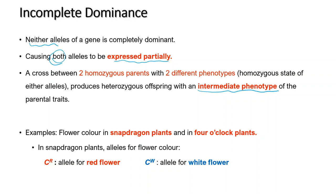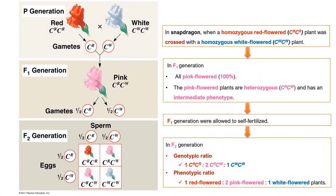In snapdragon plants, flower color is controlled by two alleles: CR for red flower and CW for white flower. When a homozygous red-flowered snapdragon is crossed with a homozygous white-flowered snapdragon, the F1 generation produces plants with all pink flowers. Pink flower is the intermediate phenotype of red and white flowers, and its genotype is heterozygous CR-CW.